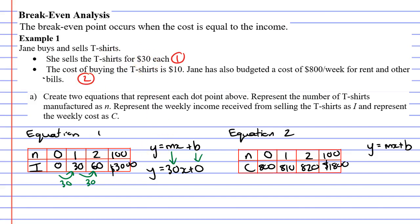Also, we need to replace the y and the x. x is usually the top row, and x is now n. So I'm going to replace the x with n. It becomes 30n. And y is usually my bottom row, which in this case is i. So I'm going to replace the y with an i. And I really don't have to put the plus 0 in. So this is my new equation, i equals 30n. That's my income.